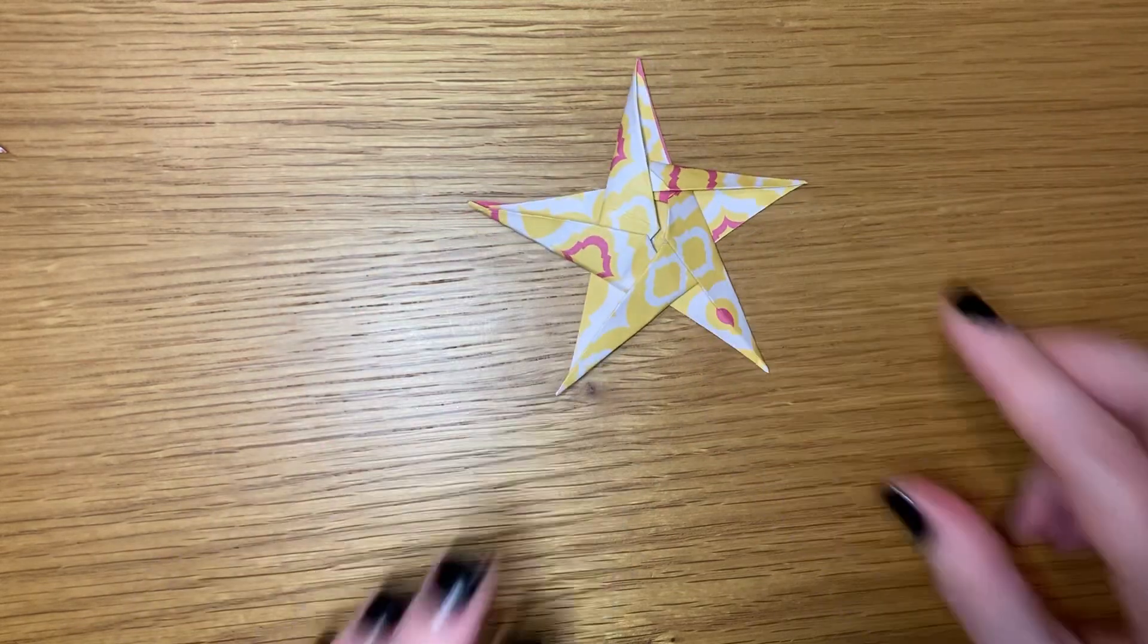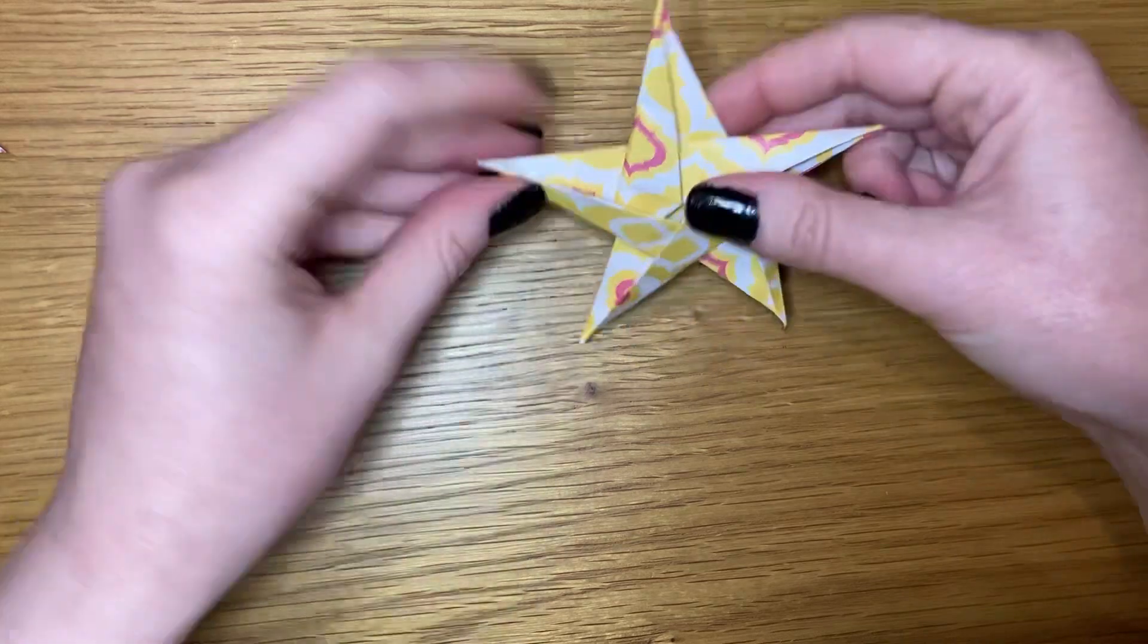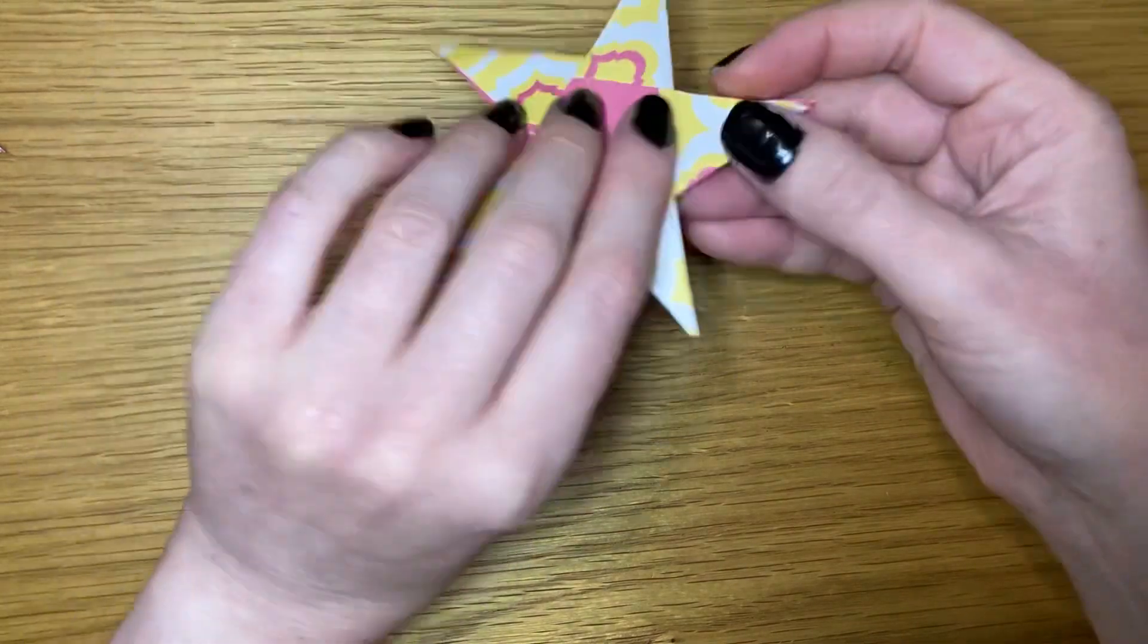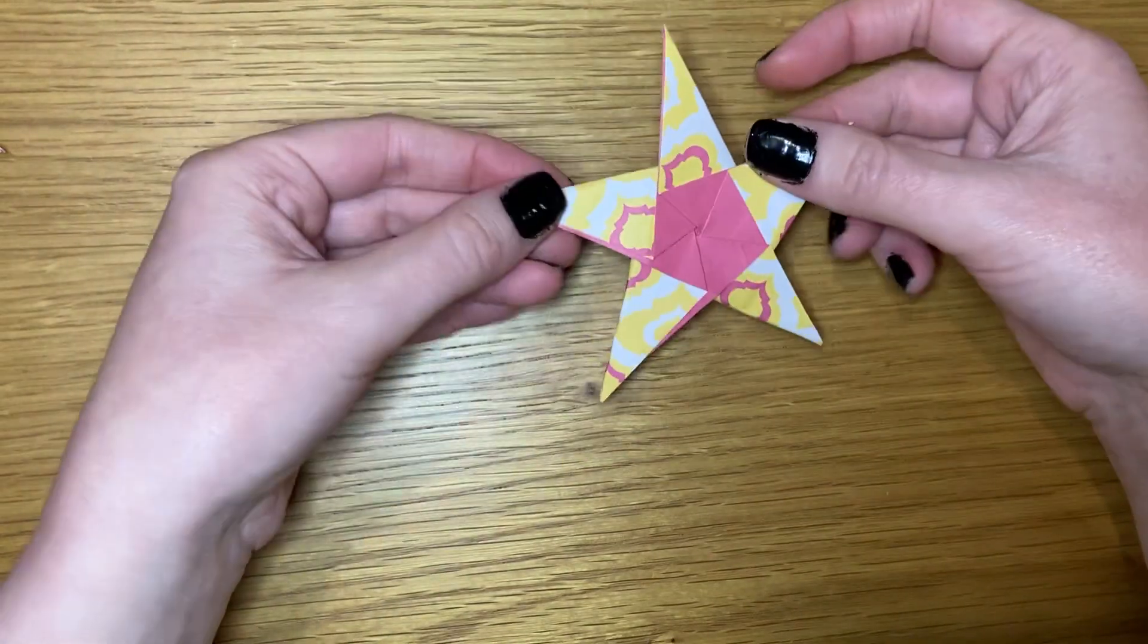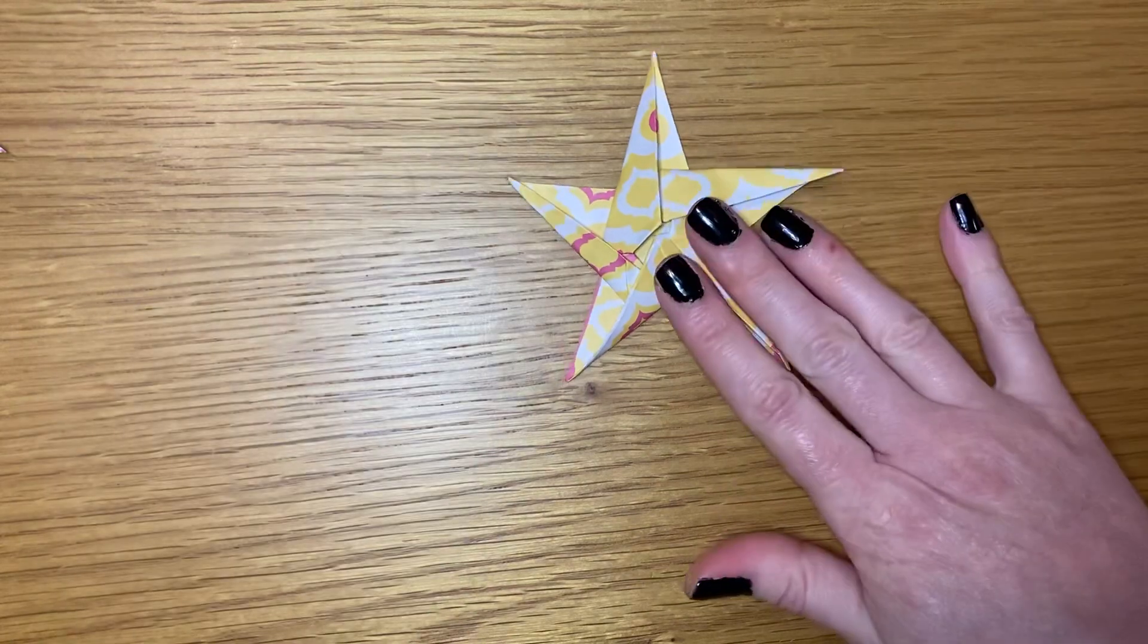And there it is, a five-pointed origami star. That's the back. You could use the back as the front if you wanted, but that's the front.